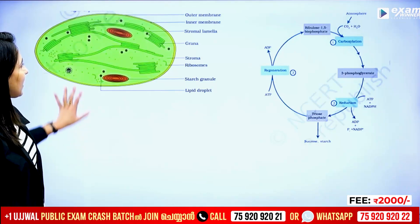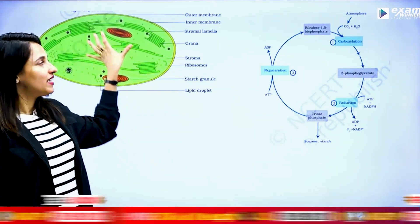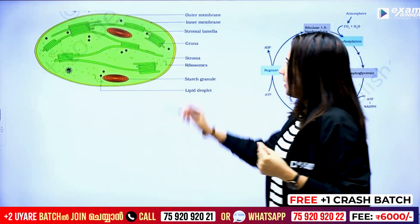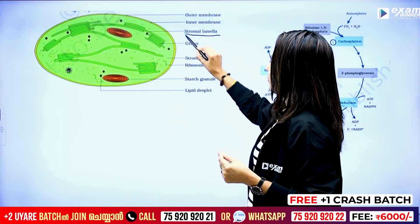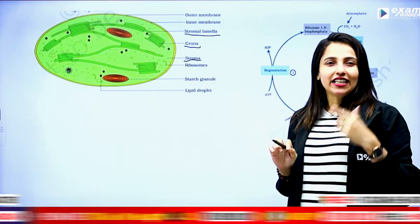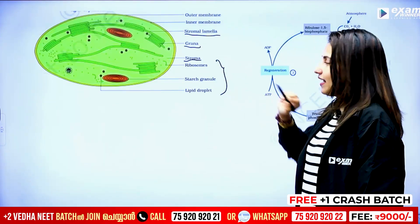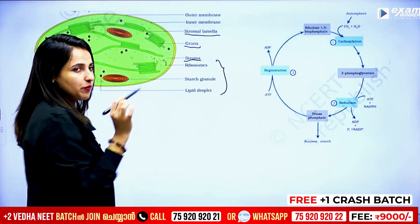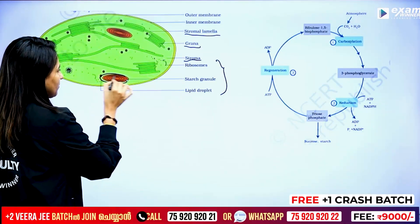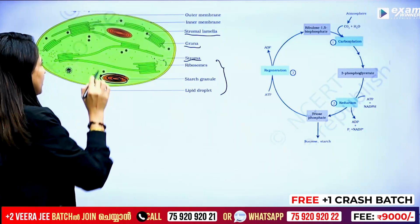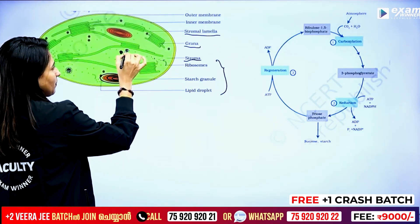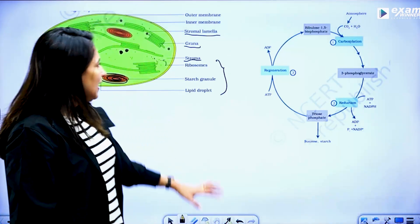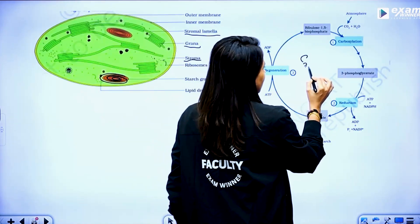This is photosynthesis. In photosynthesis, you can use the chloroplast diagram — outer membrane, inner membrane, stroma, lamella, grana-stroma. The whole thing includes ribosome, starch granule, lipid droplet.